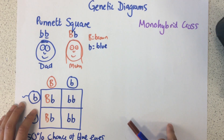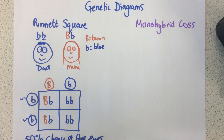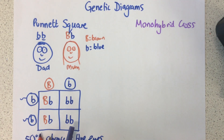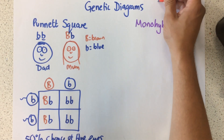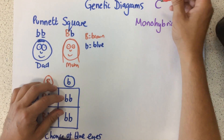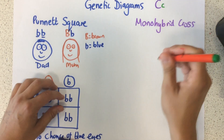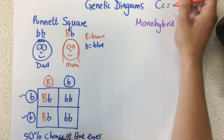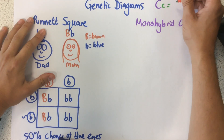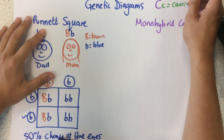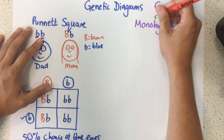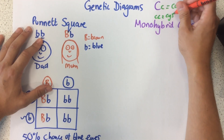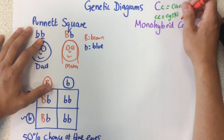A monohybrid cross shows exactly the same thing. Let's imagine we're dealing with cystic fibrosis this time. Cystic fibrosis is a recessive disorder. If someone has one dominant and one recessive allele for that genotype, it means they are a carrier of cystic fibrosis — they don't have it themselves, but they can pass it on. If they have two recessive alleles, they have cystic fibrosis.